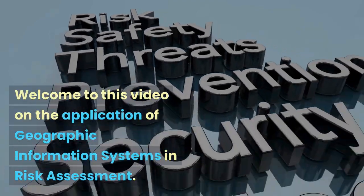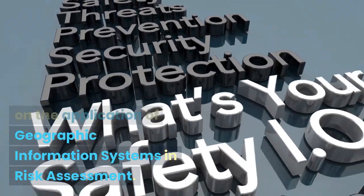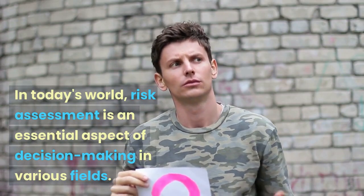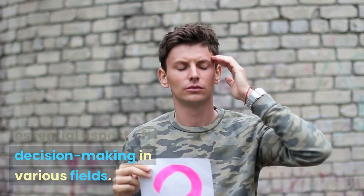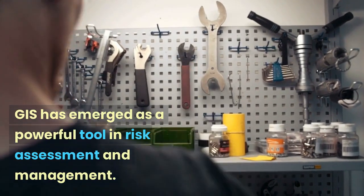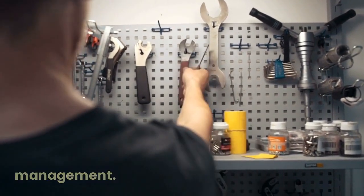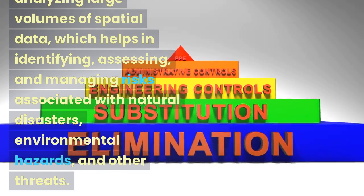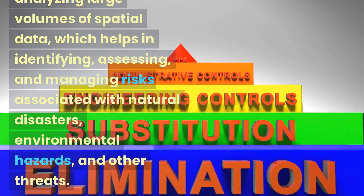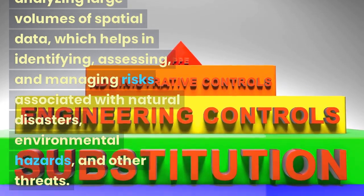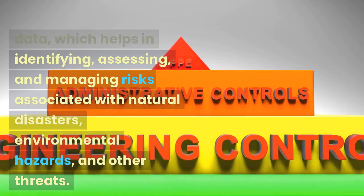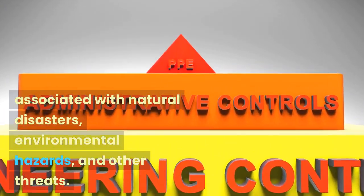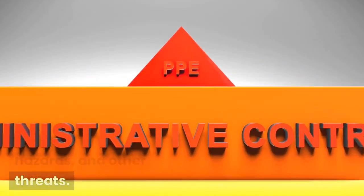Welcome to this video on the application of Geographic Information Systems in Risk Assessment. In today's world, risk assessment is an essential aspect of decision-making in various fields. GIS has emerged as a powerful tool in risk assessment and management. GIS technology is useful in integrating and analyzing large volumes of spatial data, which helps in identifying, assessing, and managing risks associated with natural disasters, environmental hazards, and other threats.